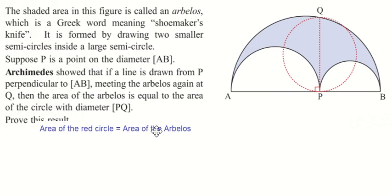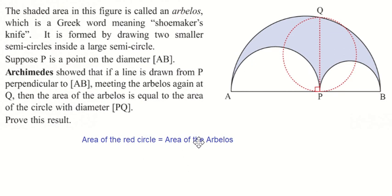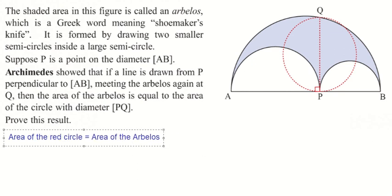So this is what we're going to prove: the area of this red circle is equal to the area of the arbelos. Let's see what we can do here. We know that the area of the red circle, the formula for a circle is π R squared.